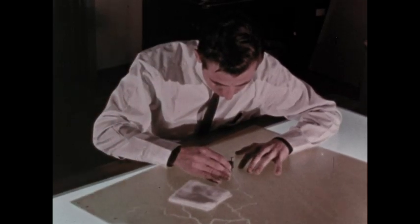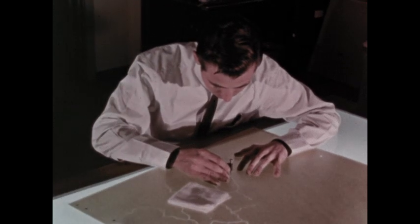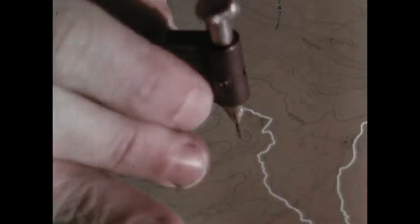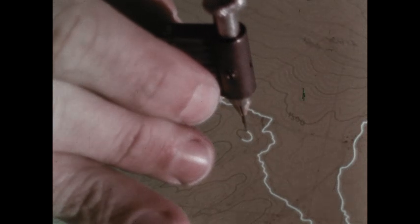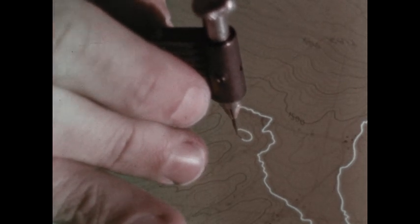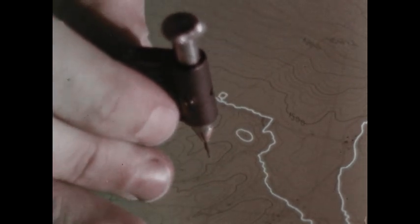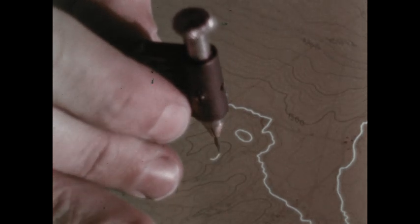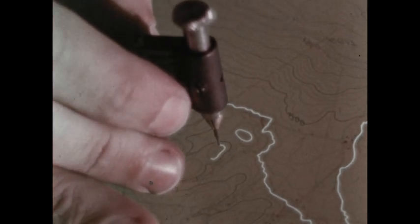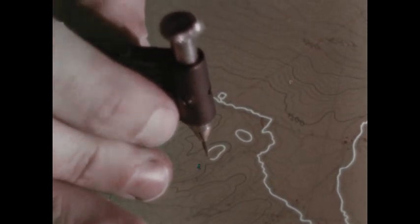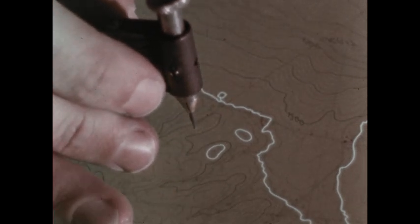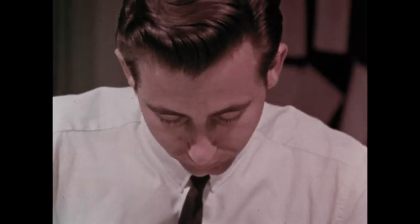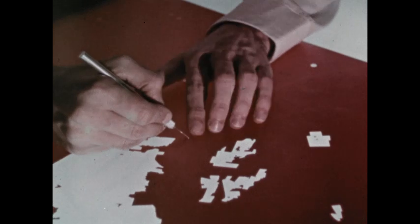When all such information has been added to the map, the preparation of the different negatives for the printing plates begins. A draftsman scribes outlines around bodies of water. This negative will eventually be made into a printing plate that will reproduce these outlines in dark blue. A separate plate will be prepared to fill in the large water features with light blue. Another plate will show woods and orchards in green.